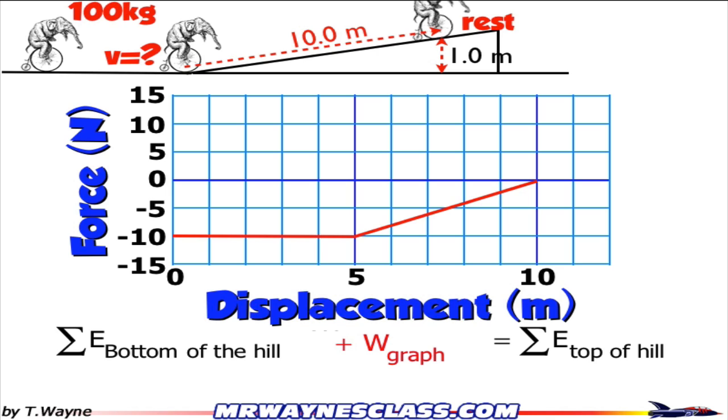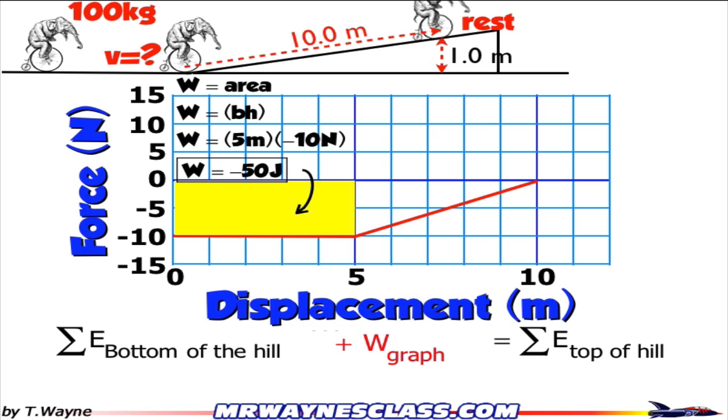So whenever you're given a graph that represents work, you just add the work of the graph. If the graph is negative, it would be an addition of a negative number. If the graph is positive, you'll just add a positive value. So here it is. That's the area between 0 and 5 meters. So that's a rectangle. So I'll use height times width, or base times height.